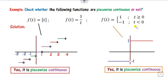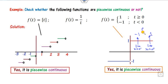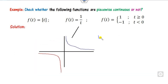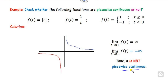Similarly, if you draw the graph of this function, what is the limit as x approaches 0 from the left — since the breaking point is 0 — and the limit as x approaches 0 from the right? At 0 from the negative side, its limit is minus 1. At 0 from the positive side, both are finite and they are not equal, so this is piecewise continuous. However, for another function, if you look at the graph approaching 0 from the left, the limit is negative infinity, which is not finite. It means this is not piecewise continuous.